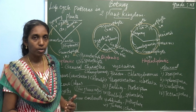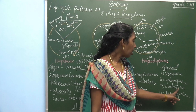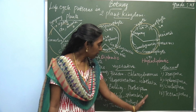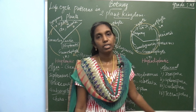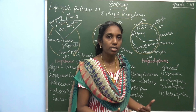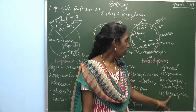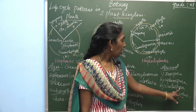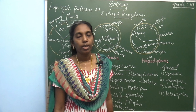Asexual reproduction takes place by developing a number of spores. The different types of asexual spores are: Zoospores, Aplanospores, Autospores, and Tetraspores.